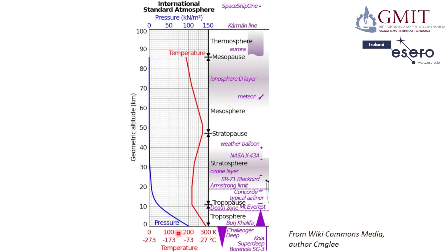If we look at the temperature graph, we'll see that as we move away from the Earth's surface up through the troposphere, temperature drops. We can assume a linear relationship between temperature and altitude — the higher we go in our CANSAT, the lower we expect the temperature to be. If we look at the pressure graph, it's kind of similar: as we go up from the surface through the troposphere, pressure drops, and again it's nearly linear — a straight line.